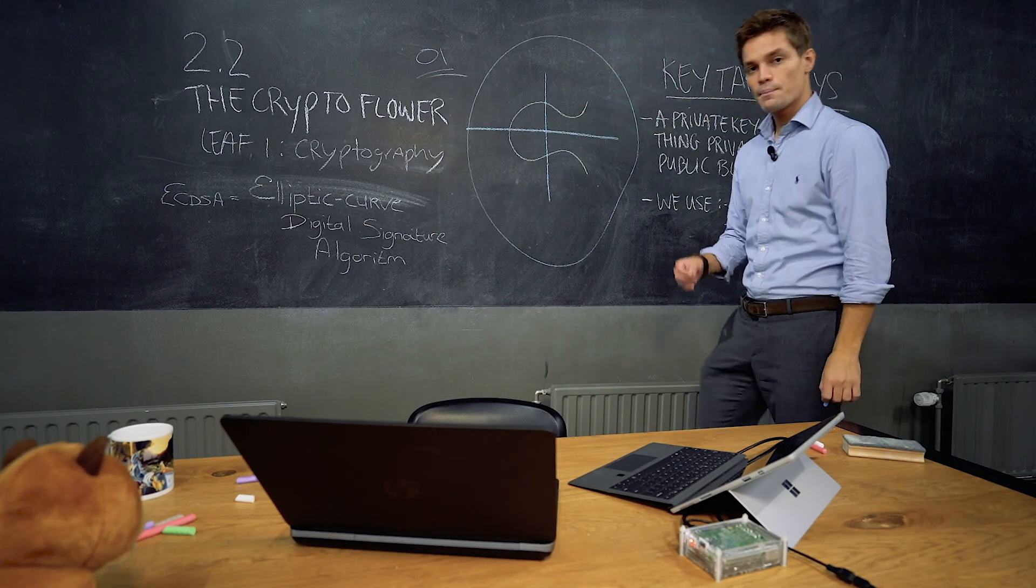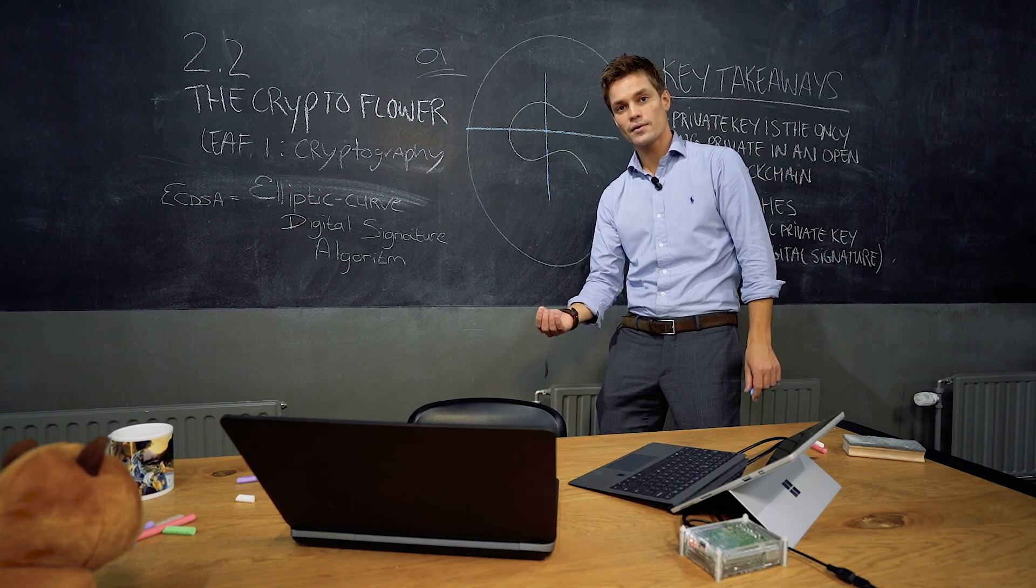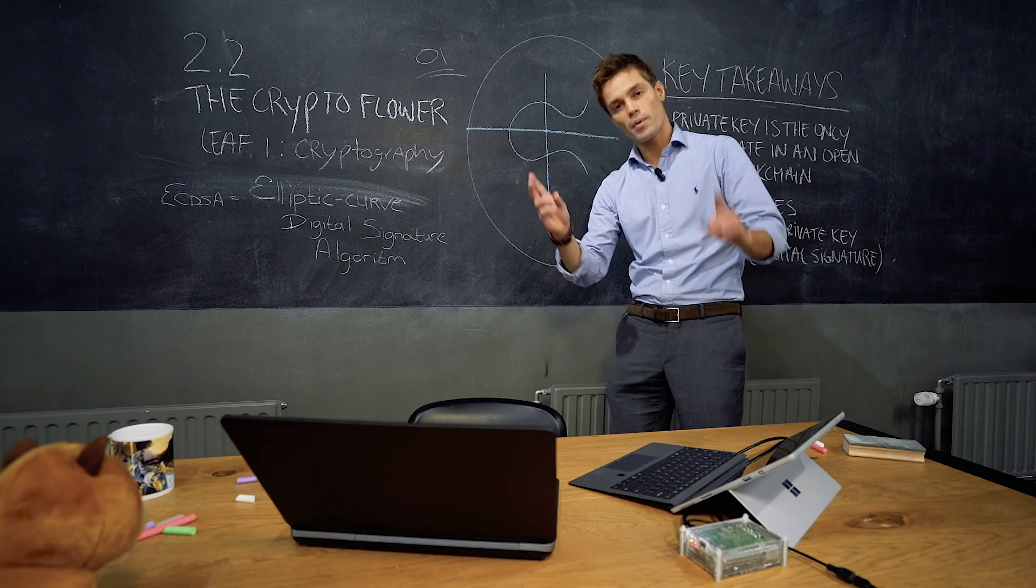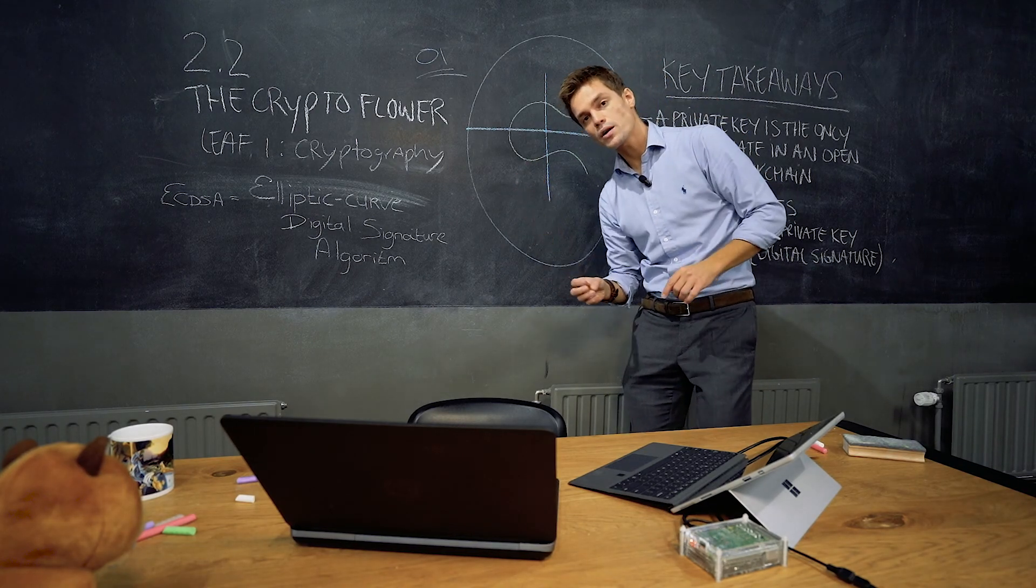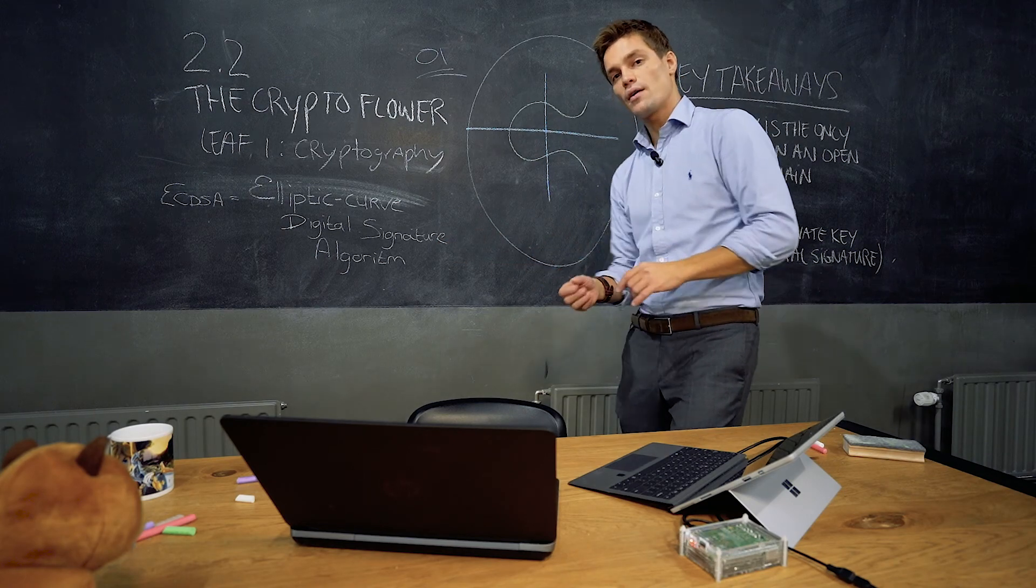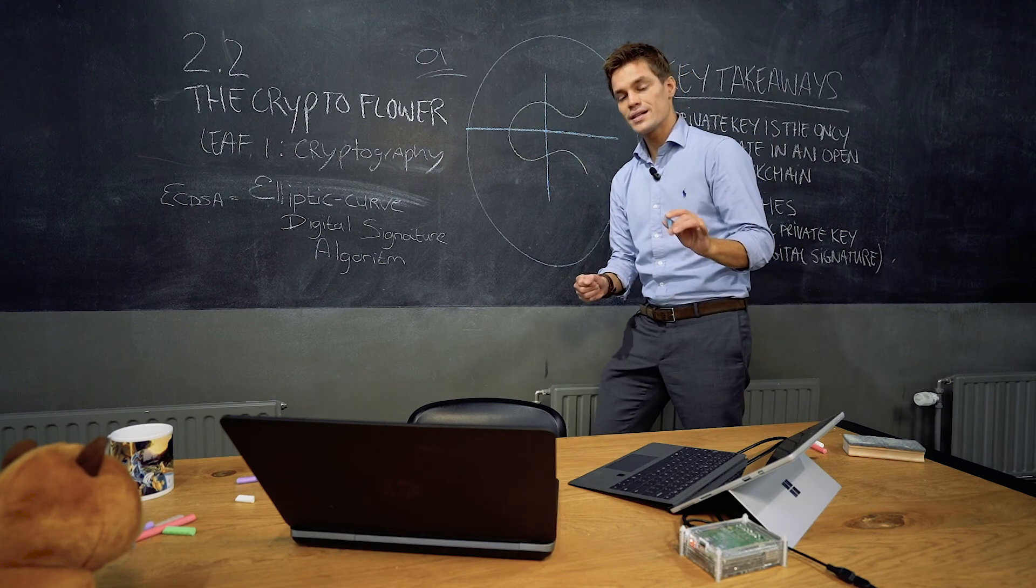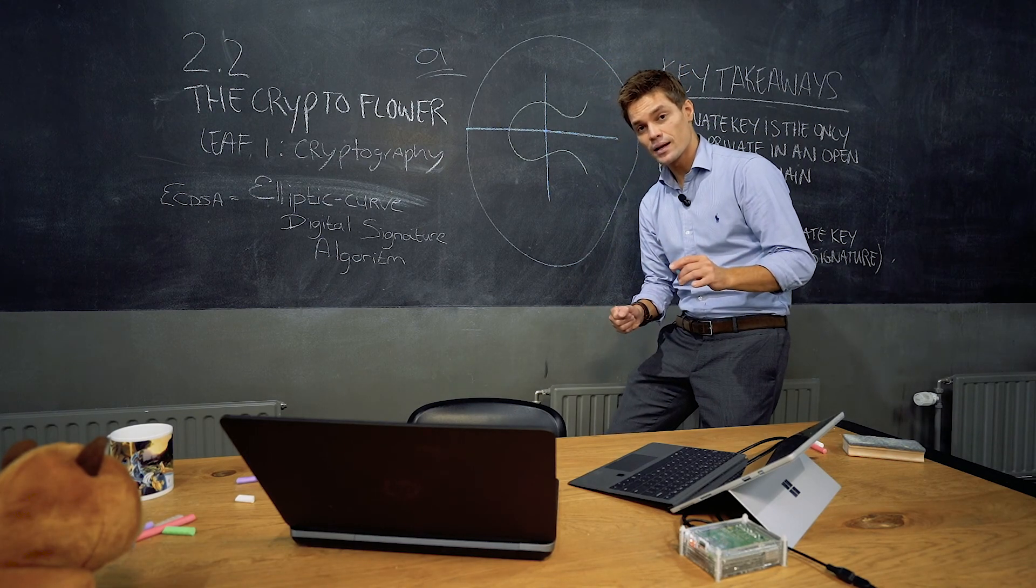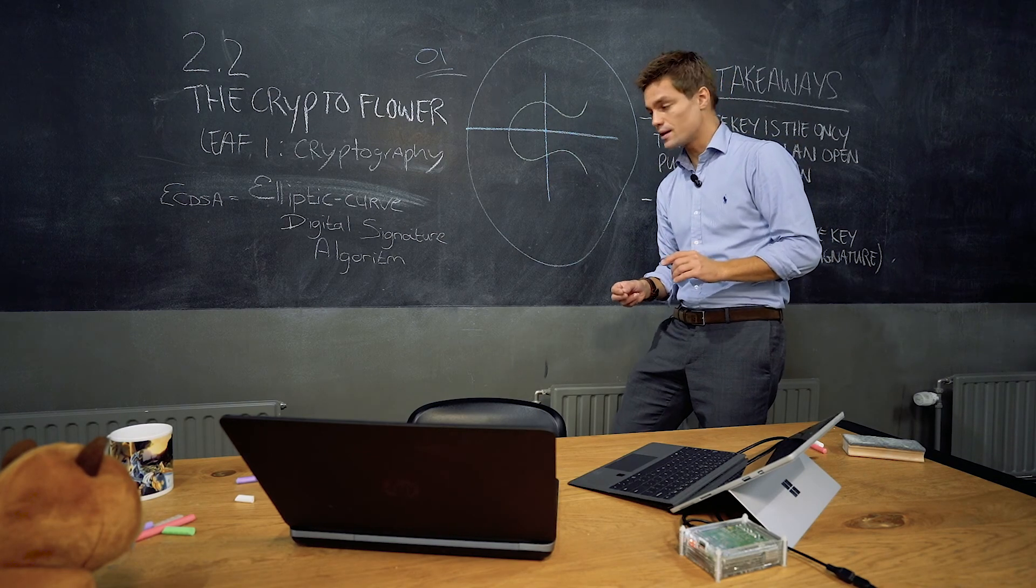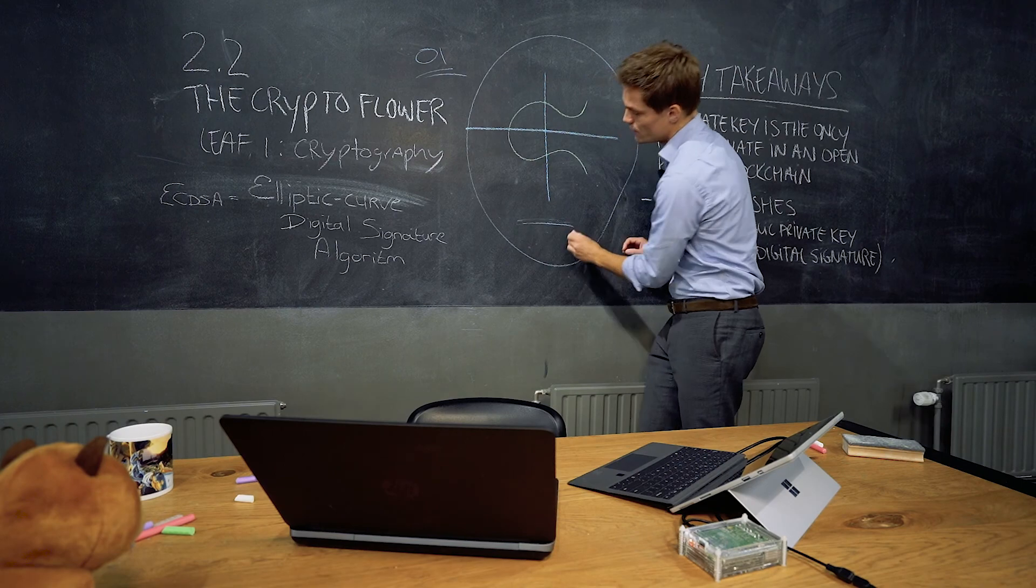So a private key is like what your password is to your email address. Your private key is to your public key. To enter your public key, to enter your mailbox where you can send money from on the blockchain, you need to have your private key. Basically, the public key is derived from the private key, and it is derived by using this algorithm.